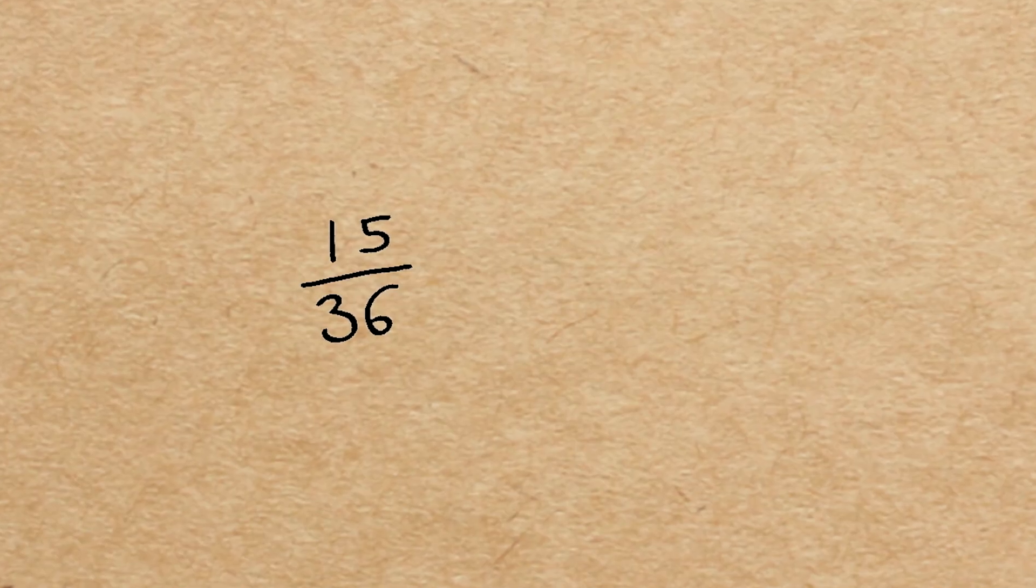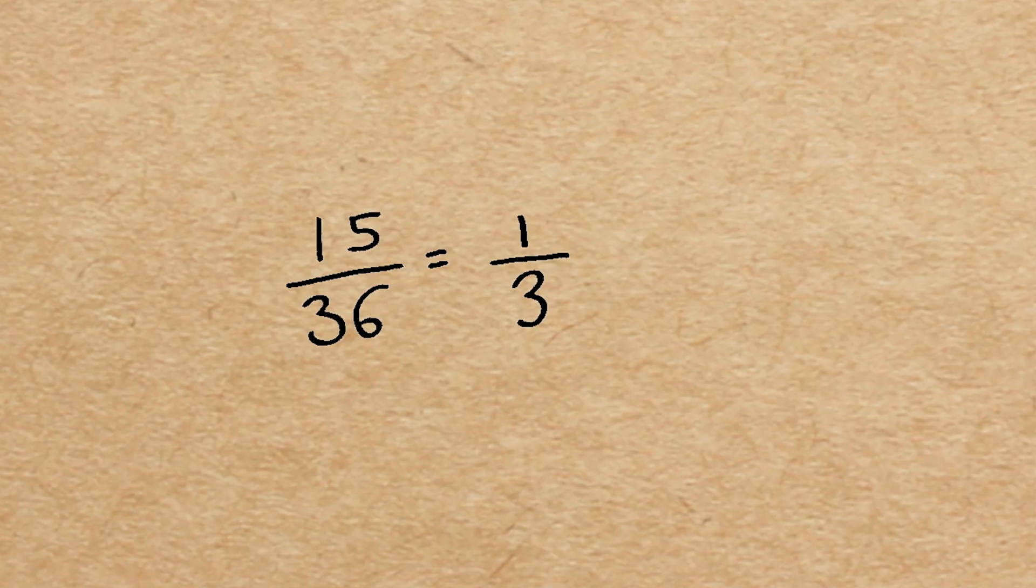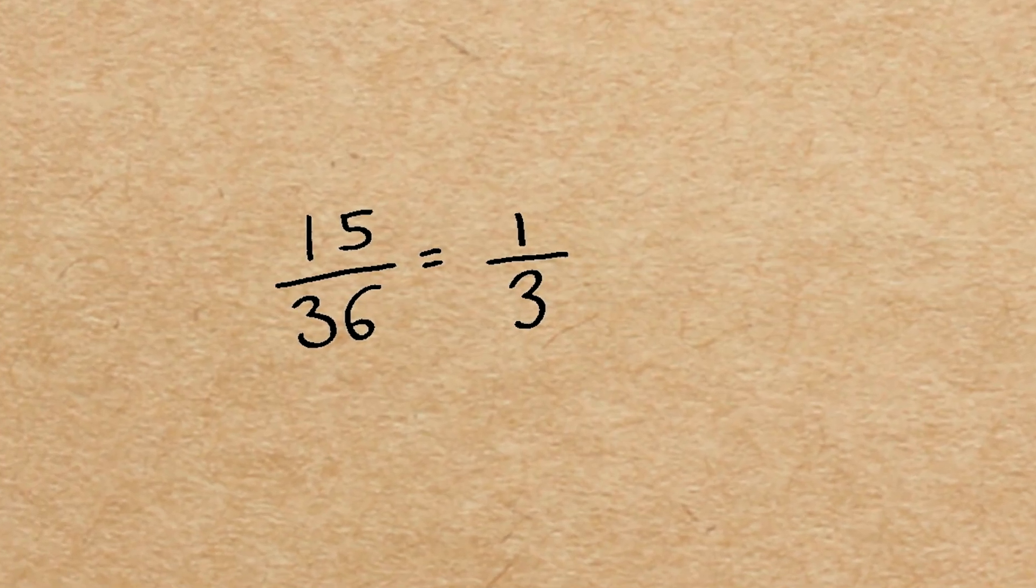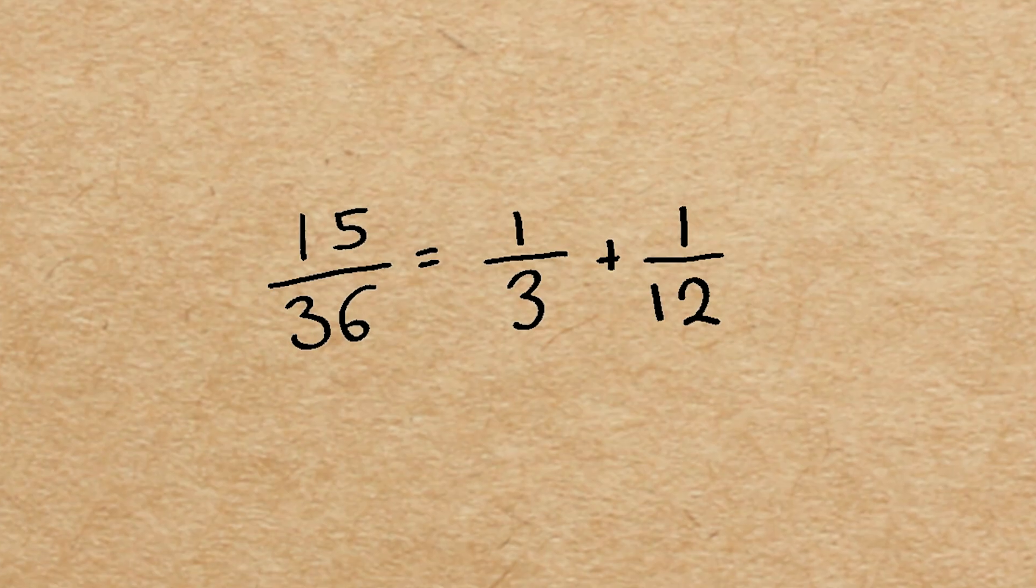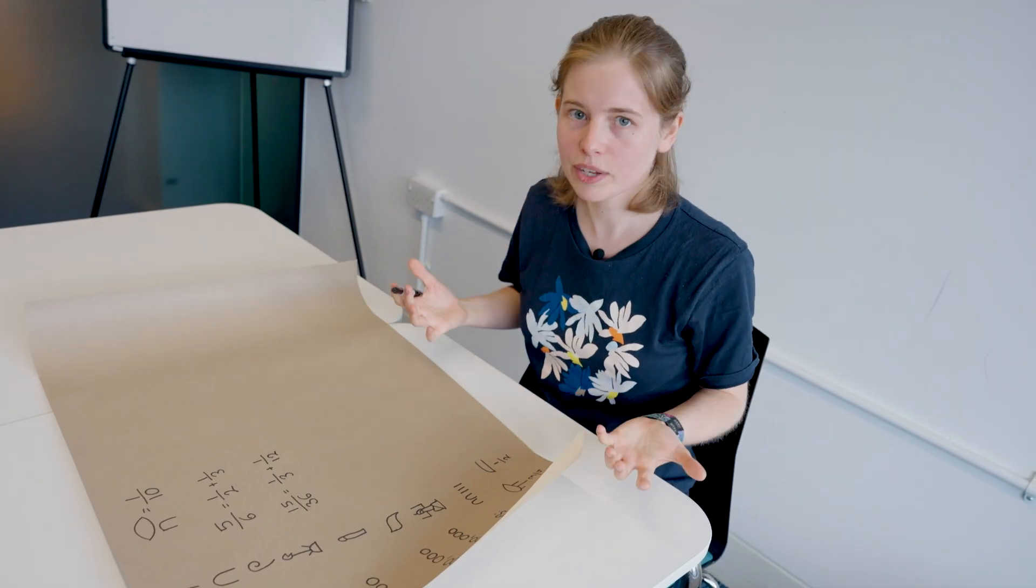Shall we try another one? Fifteen thirty-sixths is going to be a third is twelve thirty-sixths, and that leaves three thirty-sixths, which is equal to a twelfth. So, so far, looks like we can do it. The question is, can we always do it?